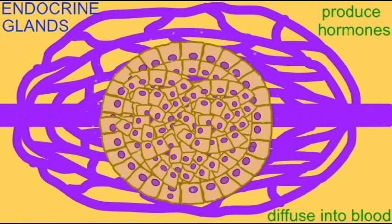Endocrine glands do not travel through tubes or ducts. Both exocrine and endocrine glands, however, are made of epithelial cells.